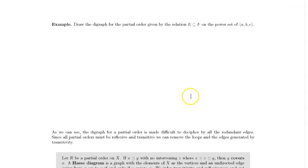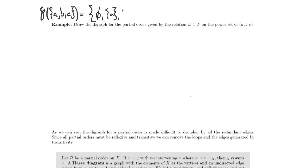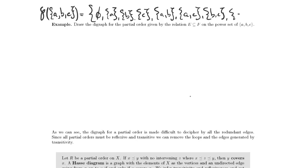Let's take a more specific look at one of those partial orders. We're going to draw the digraph for the partial order given by the subset relation on the power set of {A, B, C}. It's a good idea to write down the power set you're working with. We have the empty set, the set {A}, the set {B}, the set {C}, the sets {A,B}, {A,C}, {B,C}, and {A,B,C}.